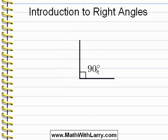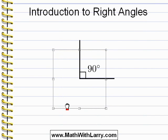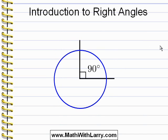We define a right angle as having 90 degrees, and here's where that comes from. I'm going to put a circle on top of my angle, like this. In math, we say that a circle has 360 degrees — it's just a definition in math. Now you can see that this right angle represents one-fourth of the circle. One-fourth of 360 is 90, so that's why we say that a right angle has 90 degrees.